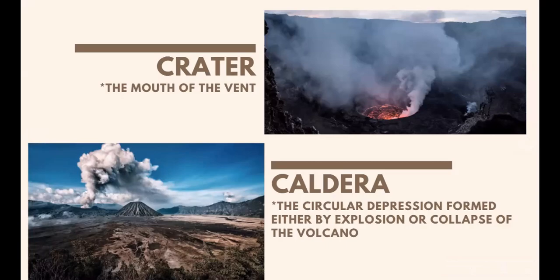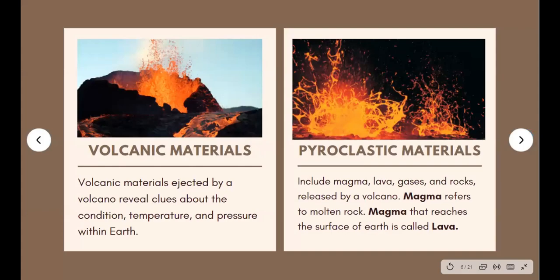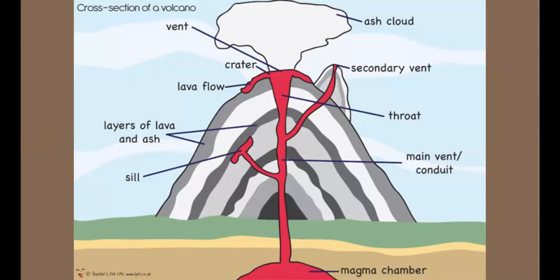Geologists learn about the Earth's interior by observing volcanic eruptions. The volcanic materials ejected reveal clues about the condition, temperature, and pressure within the Earth. Volcanic or pyroclastic materials include magma, lava, gases, and rocks released by a volcano. Magma refers to molten rock inside the Earth; magma that reaches the surface is called lava. Magma in the asthenosphere is produced when plate movements create internal pressure. Collision of plates may result in subduction, causing magma from the upper mantle to rise to the surface, forming a volcano.